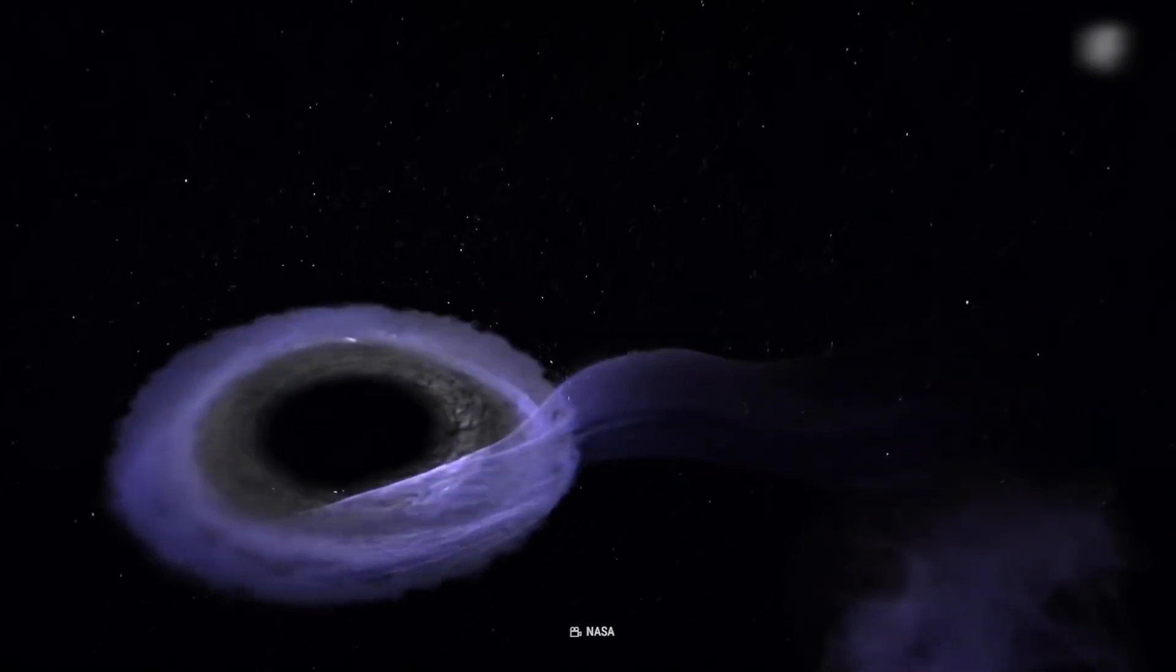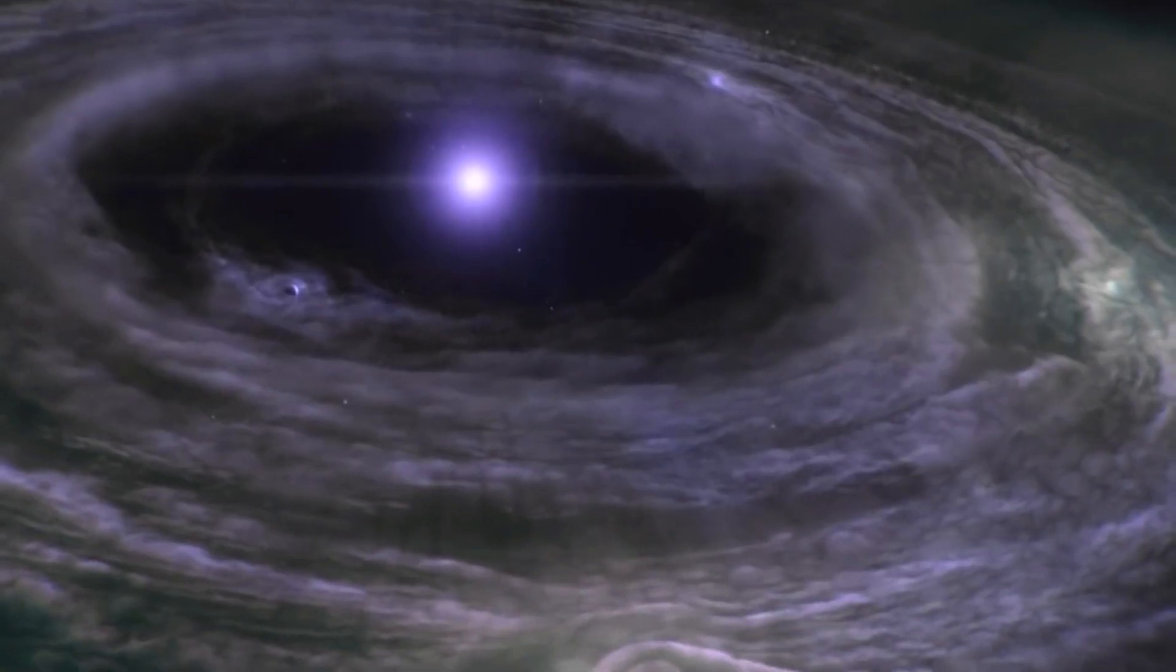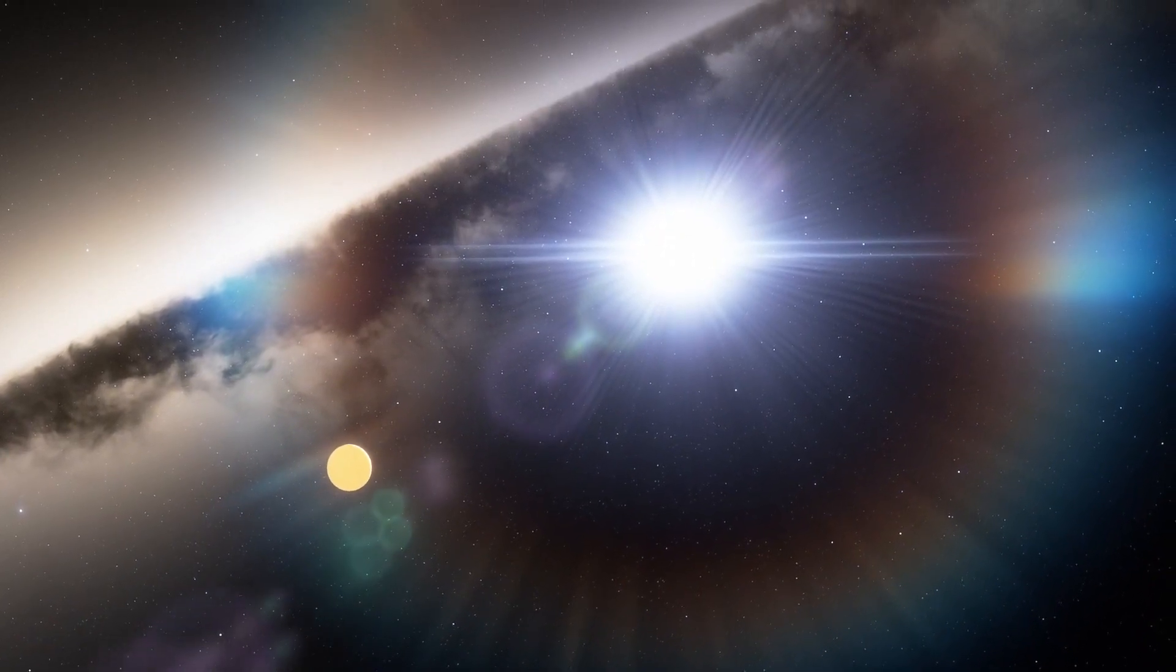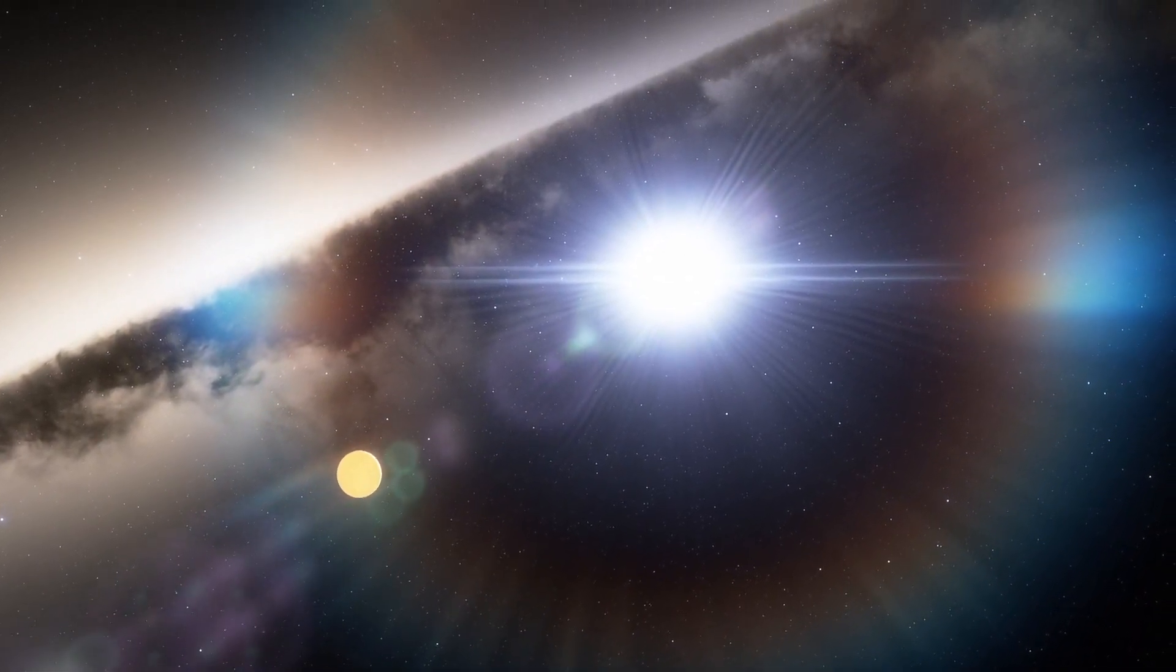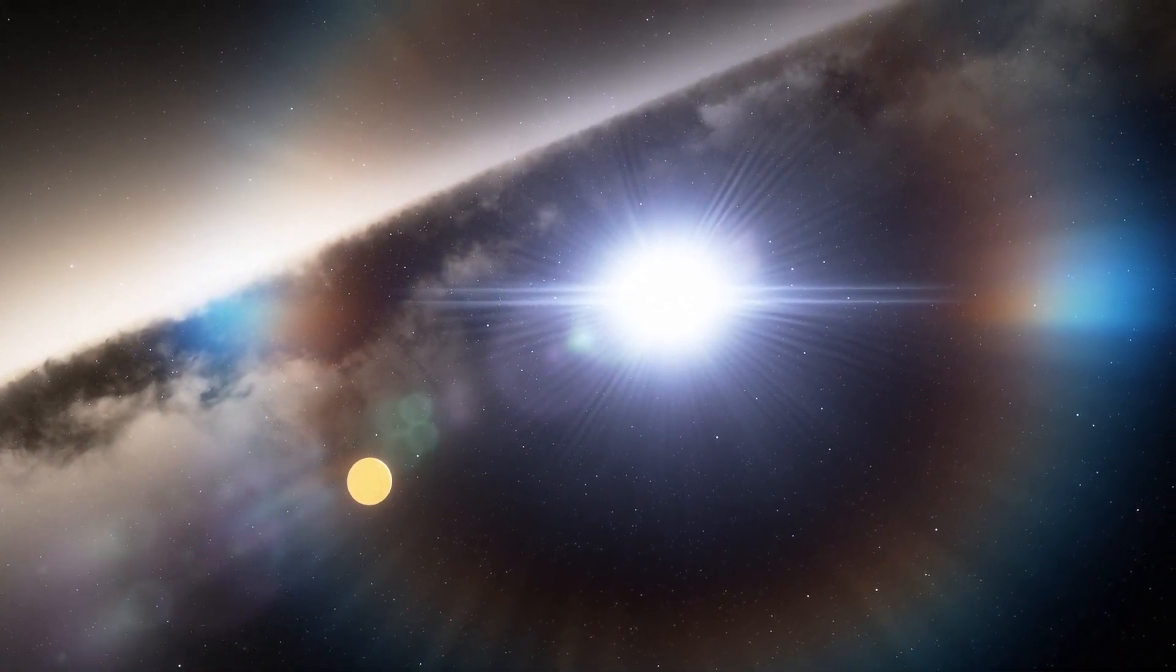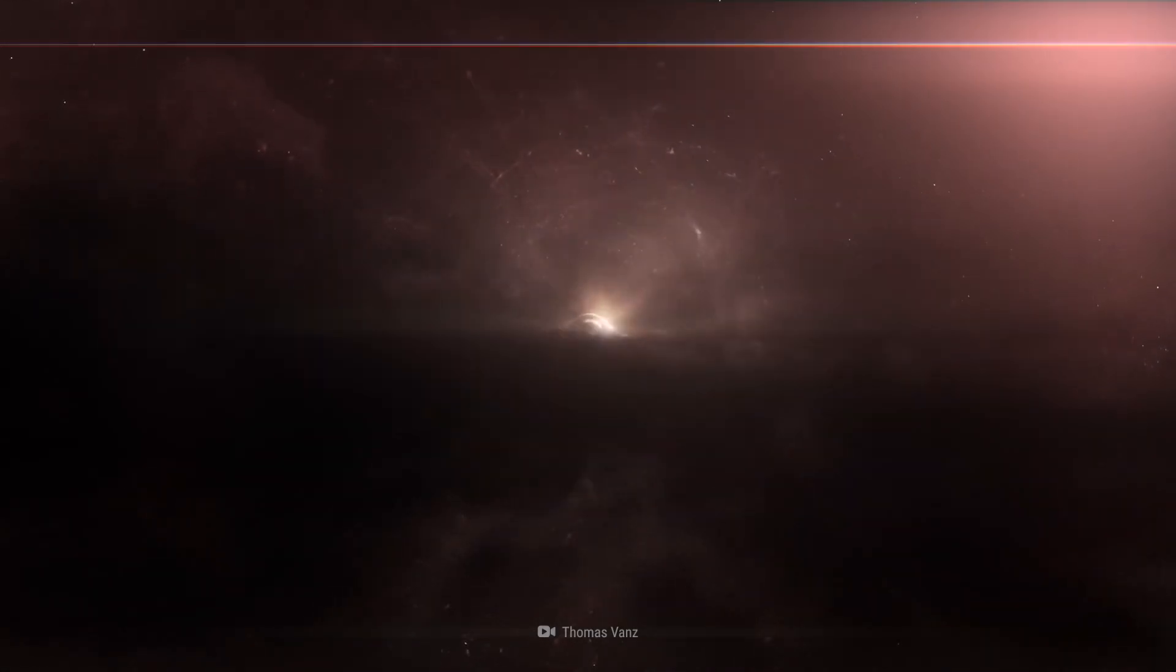However, when the star eventually dies and goes supernova, if the companion is not ejected, it is possible that they will eventually form a twin pair of black holes. They may even collide and merge, leaving the young planet in orbit around a little heart of darkness.